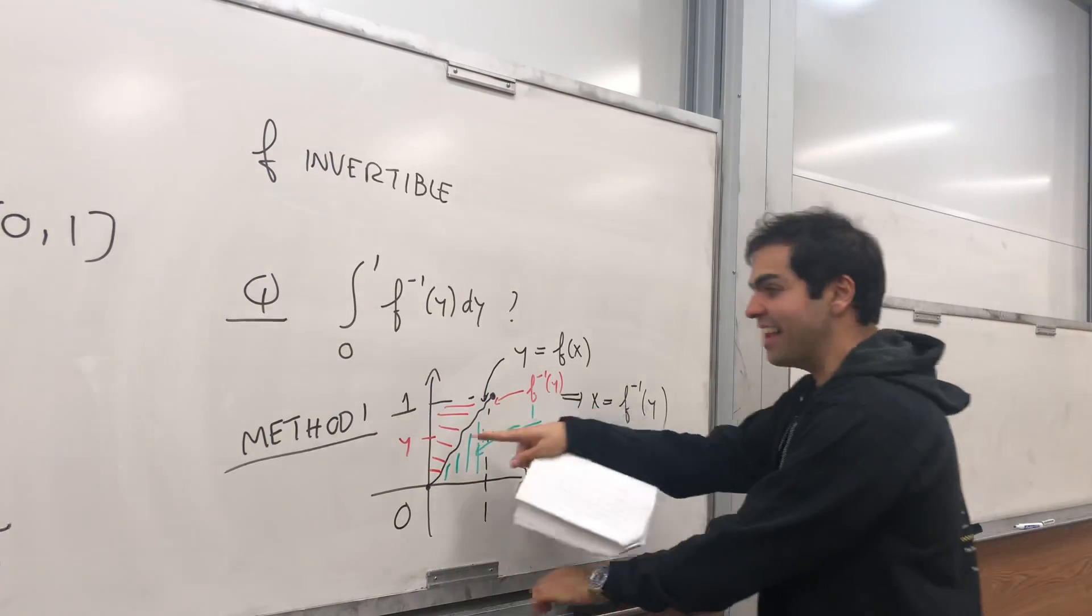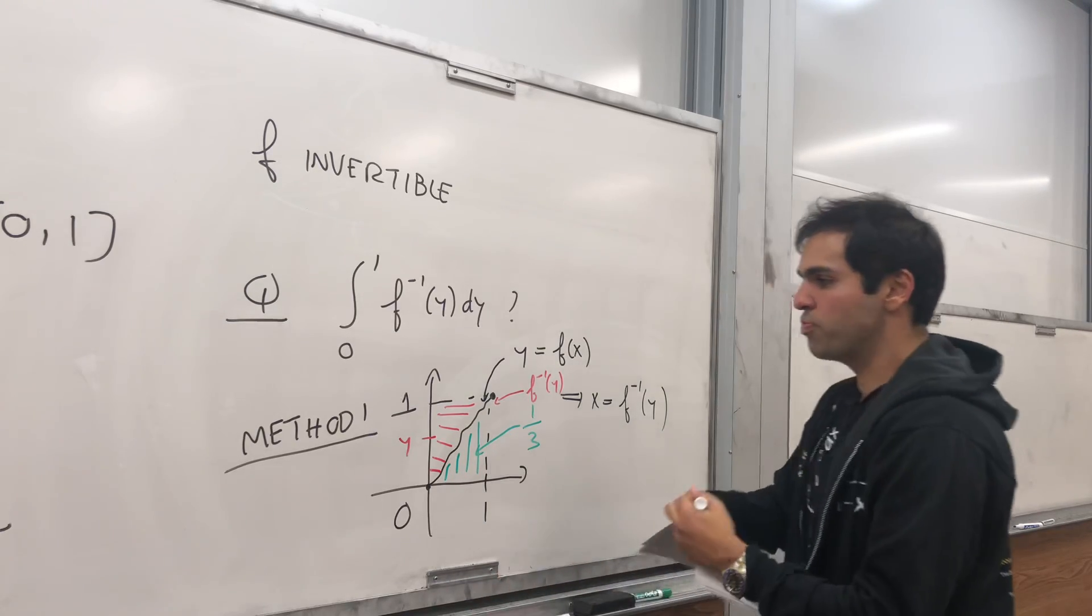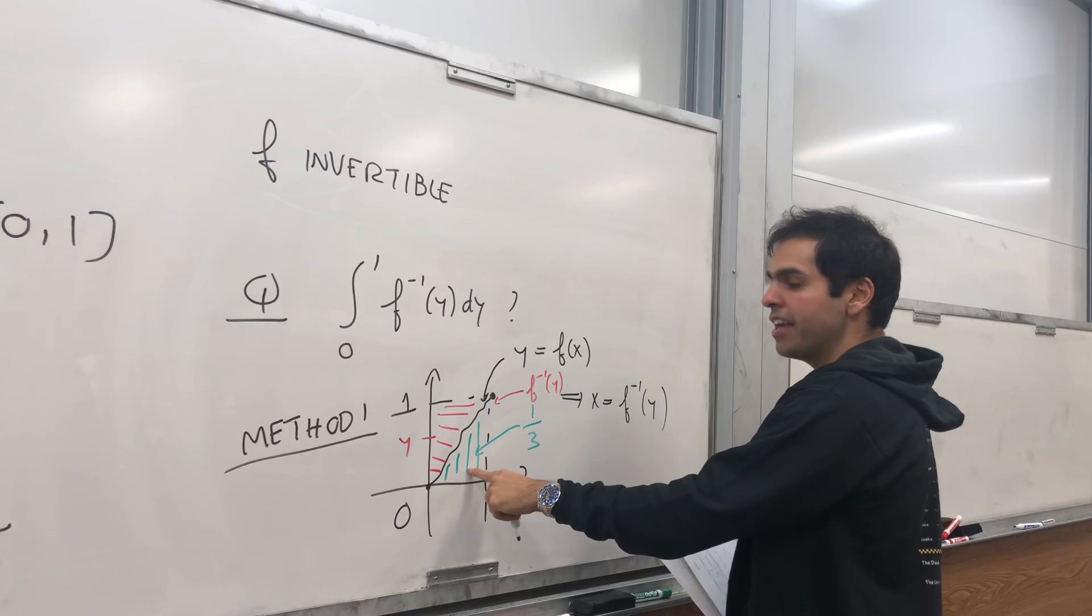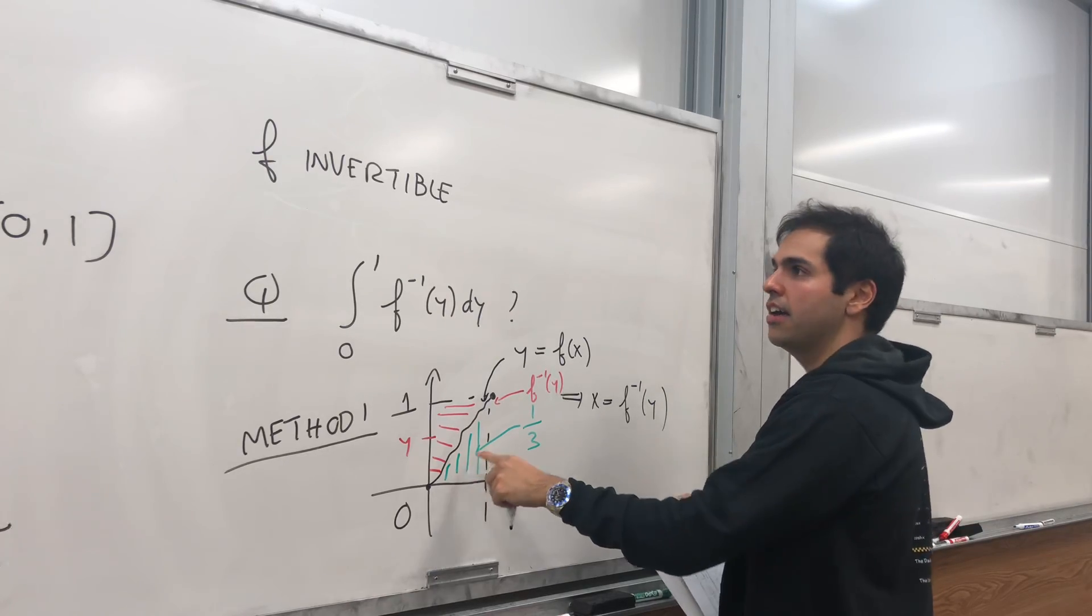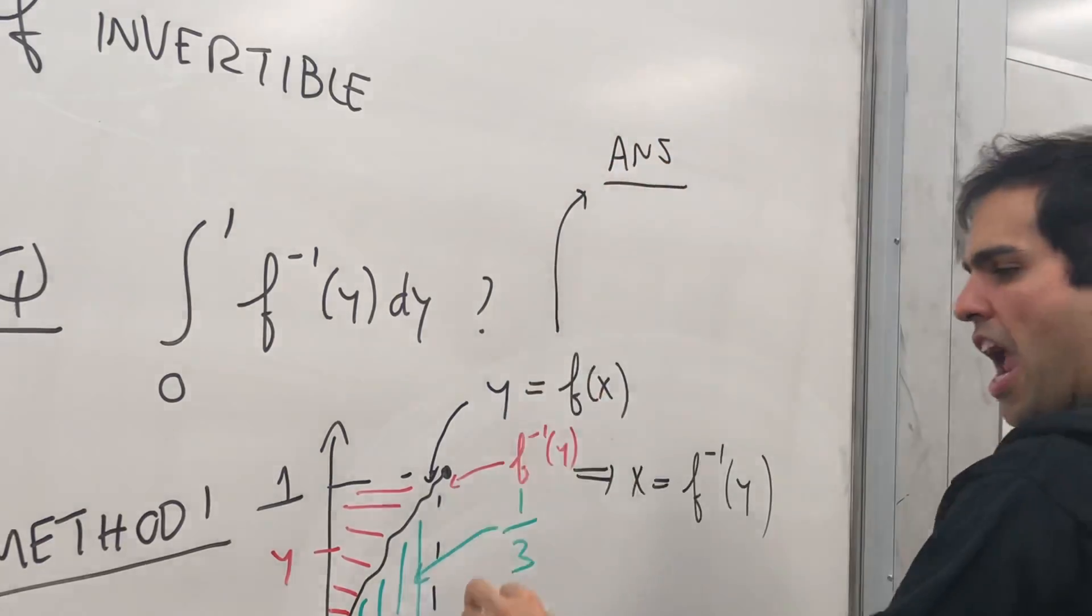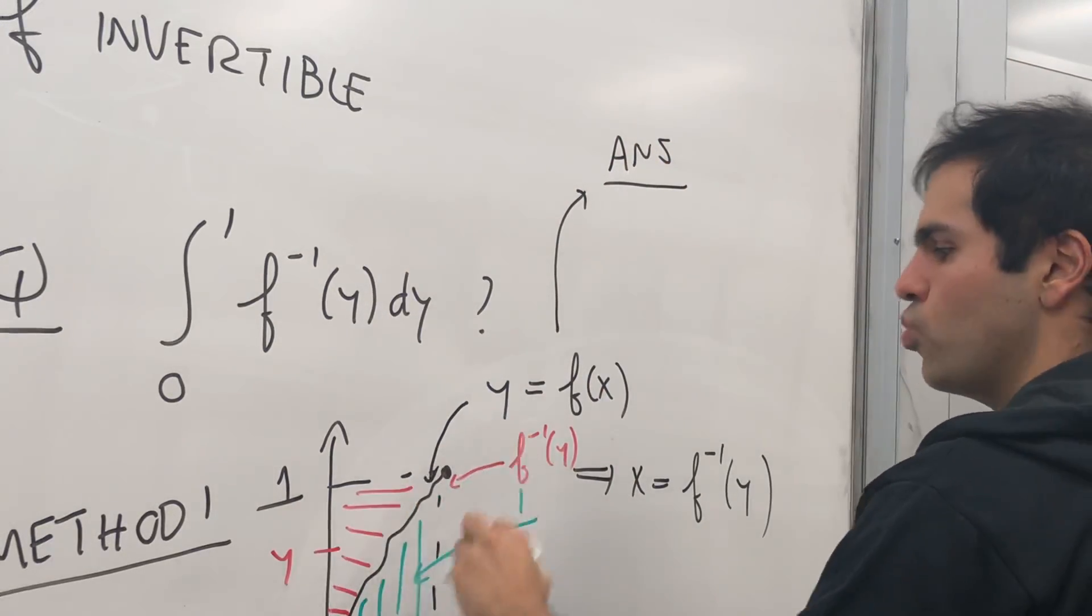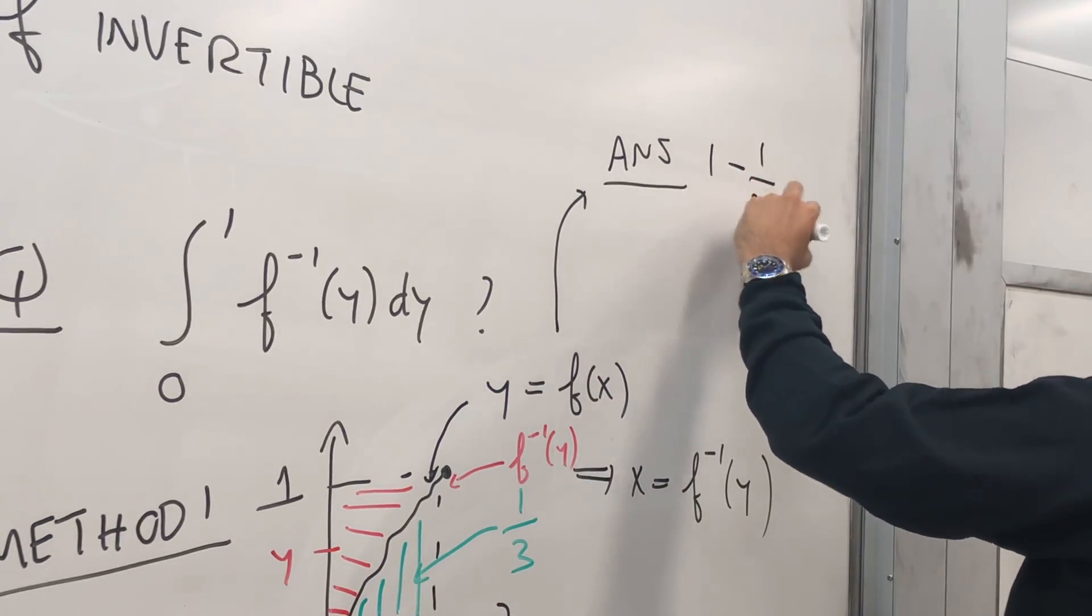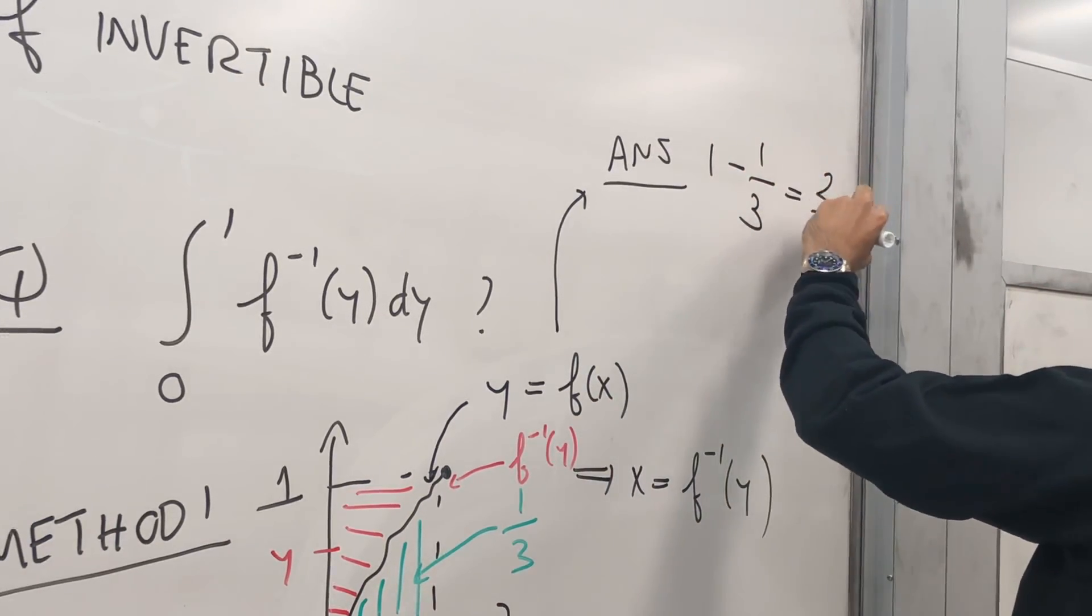And notice that area in red is precisely the area of the square minus the green area. And therefore, what would be our answer? Our answer would be the area of that square, which is 1, minus the green area, which is 1/3, and that becomes 2/3.